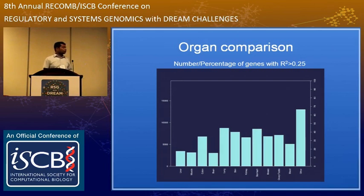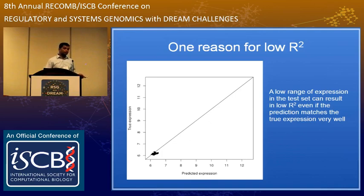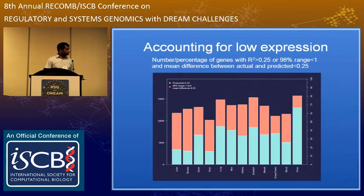If I break down the genes with R-squared greater than 0.25 by test organ — for example, how well can I predict liver gene expression given all other organs — for liver itself, maybe 15% of genes are predicted with R-squared greater than 0.25 when I leave out liver entirely. One reason for low R-squared is very low variability of expression in the test set; if there is very low variability, there is no variation to explain even if the prediction is correct.